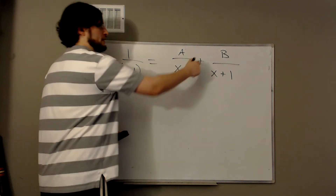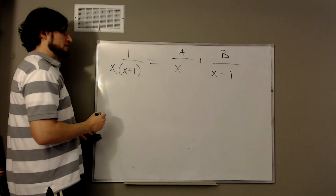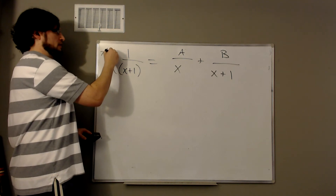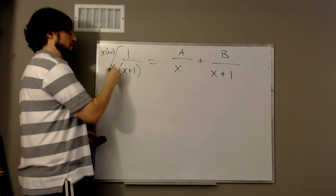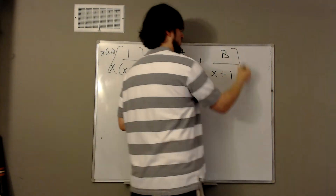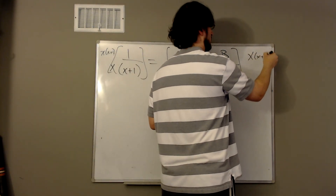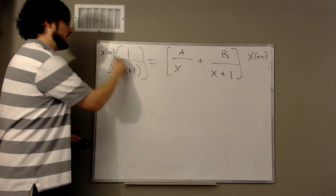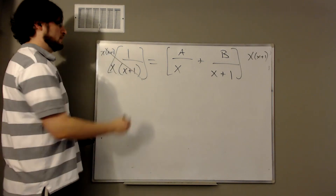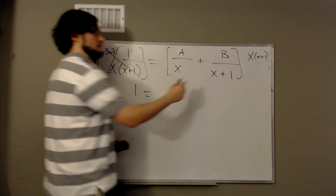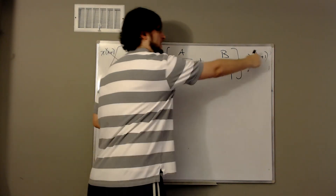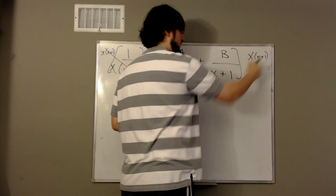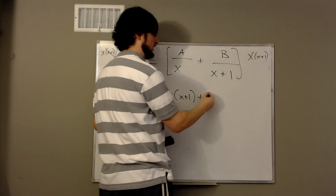Let's see how to find a and b. The first thing I'm going to do is multiply both sides by x times x plus 1. The reason is that it clears out all denominators. I get a 1 on the left. Multiplying through, the x cancels giving a times x plus 1, and the x plus 1 cancels giving b times x.